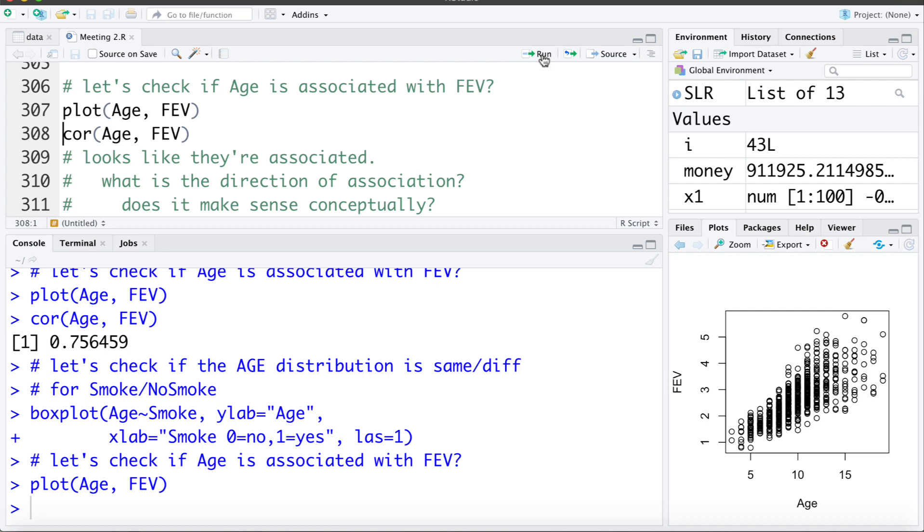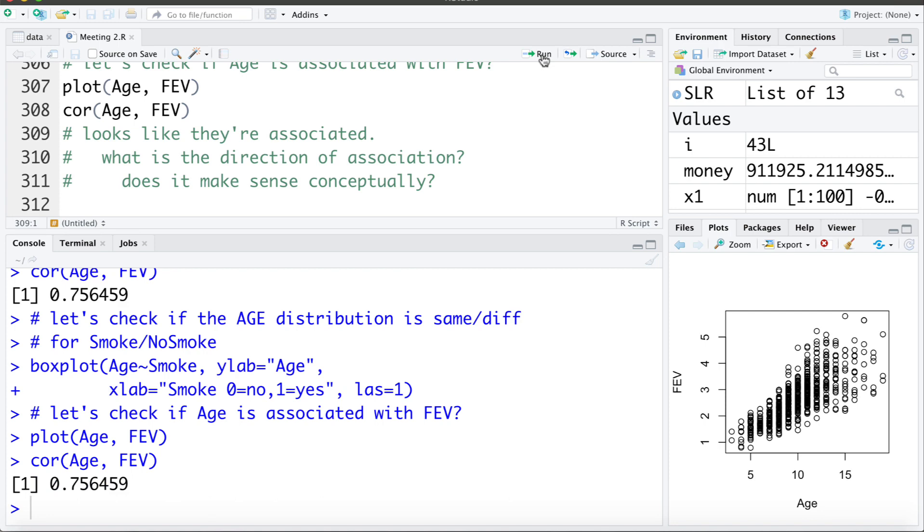And if we want to quantify that numerically we can calculate the correlation between age and FEV. The correlation of 0.756 again is a pretty strong correlation. So it looks like they are associated.